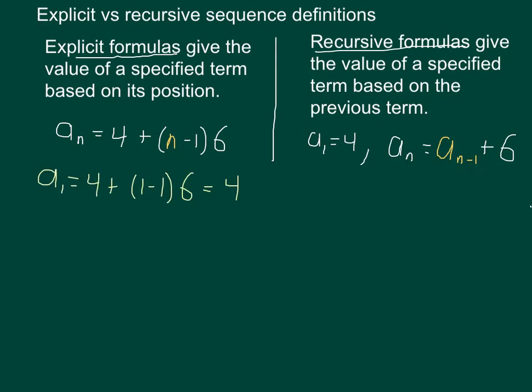To find the first term of a sequence using an explicit formula, what I do is take 1, 1 for first term, put it in for n, and solve. Notice that I end up with a 1 minus 1, or a 0 times 6. So my first term is really just going to be this. And of course, we can do this for the subsequent terms.